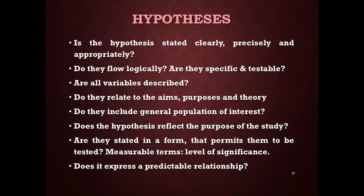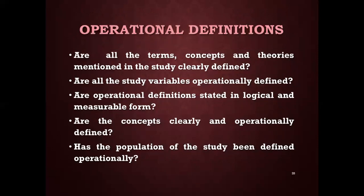Hypothesis: is it stated clearly, precisely, and appropriately? Do they flow logically? Are they specific and testable? Are all variables described? Do they relate to the aims, purposes, and theory? Do they include the general population of interest? Does the hypothesis reflect the purpose of the study? Are they stated in a form that permits testing, with measurable terms and level of significance mentioned? Does it express a predictable relationship? Are all terms, concepts, and theories clearly defined, and are all study variables operationally defined?